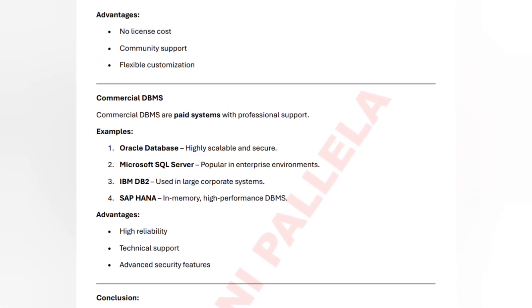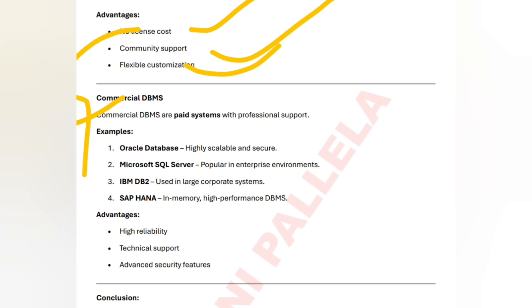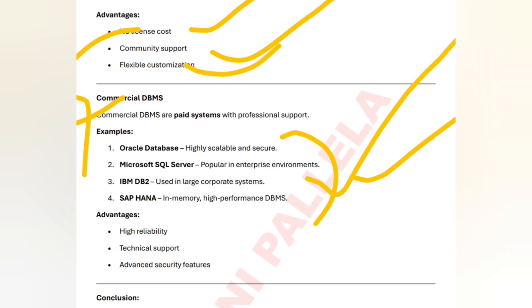Advantages of open source DBMS: no license cost, customization is available, and community support is provided. Coming to commercial DBMS — these are paid systems where you pay for professional support. Examples: Oracle DBMS, Microsoft SQL Server, IBM DB2, and SAP HANA. These four are the examples for paid/commercial database management systems.